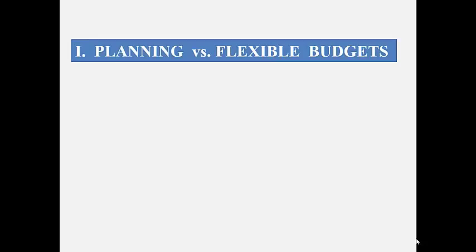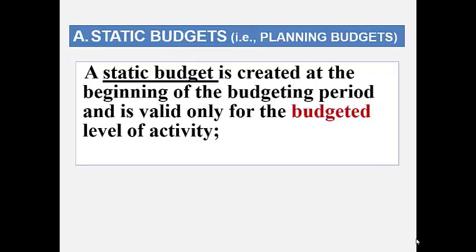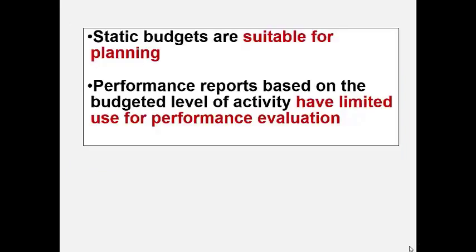First we'll look at planning versus flexible budgets. Static budgets, or planning budgets — those names are synonymous — are created at the beginning of the period and they're only valid for one level of activity. When we covered budgeting, we prepared an income statement based on one level of projected sales, say we thought sales would be 10,000 units. These are suitable for planning, but static or planning budgets have limited use for performance evaluation.